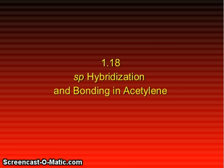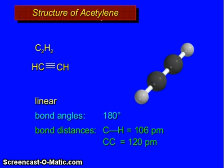sp hybridization and bonding in acetylene, C₂H₂. This is the structure: linear, bond angle 180 degrees. Bond distances: C-H is 106 pm and C-C is 120 pm.